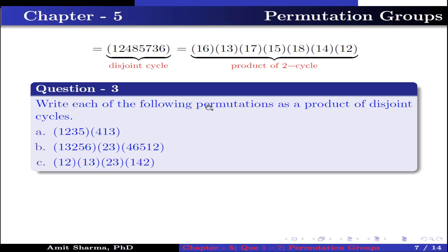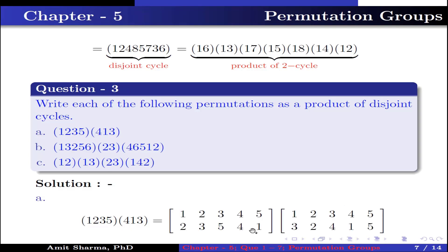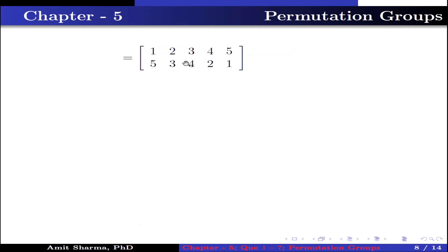Question number 3: write each of the following permutations as a product of disjoint cycles. Part A: (1 2 3 5)(4 1 3). The product of these two permutations is further computed, and we get (1 5 2 3 4) as the disjoint cycle.